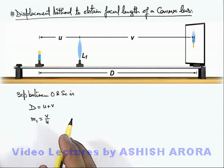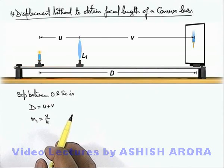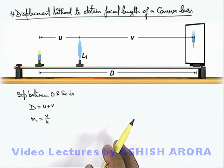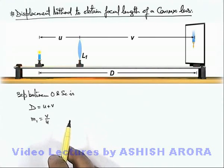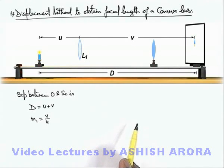Now as we know in lens formula, reversibility of light is equally valid. So as image is obtained at a distance v when object is placed at a distance u, if the lens is displaced to another position such that...